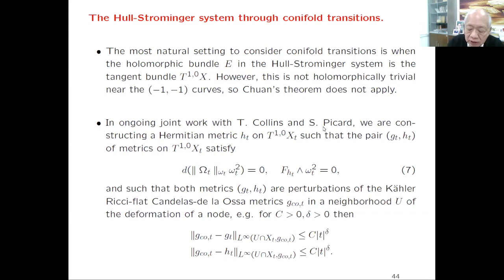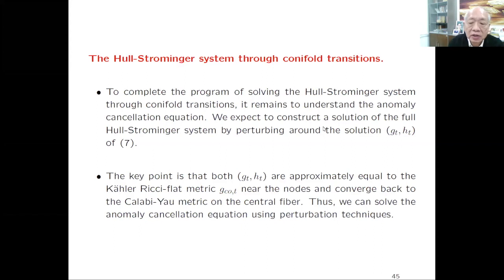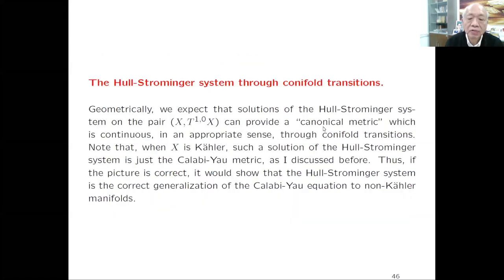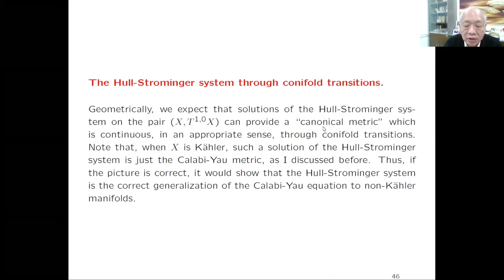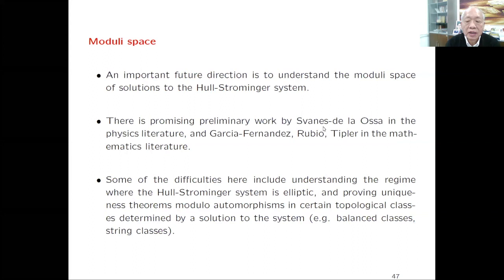This is non-trivial but is based on the balanced metric that Jun Li, Fu, and I constructed. We need to do approximation and carefully control the anomaly cancellation equation through a singular perturbation argument. In any case, we expect that the solution of the full Strominger system on the tangent bundle provides a canonical metric which is continuous in the appropriate sense through the conifold transition. This is a rather interesting and exciting result showing how Calabi-Yau manifolds can transition from one topological type to another through the Strominger system.